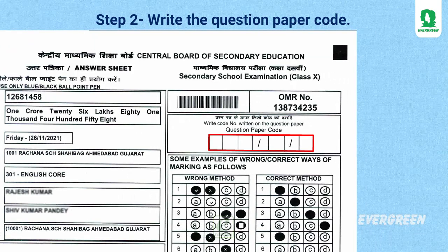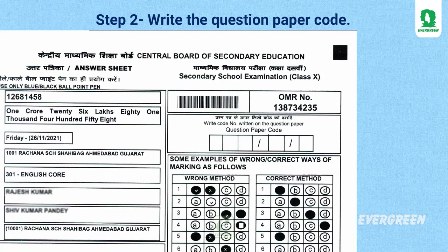Candidate has to write question paper code which is written on the question paper in the upper right corner of the OMR.